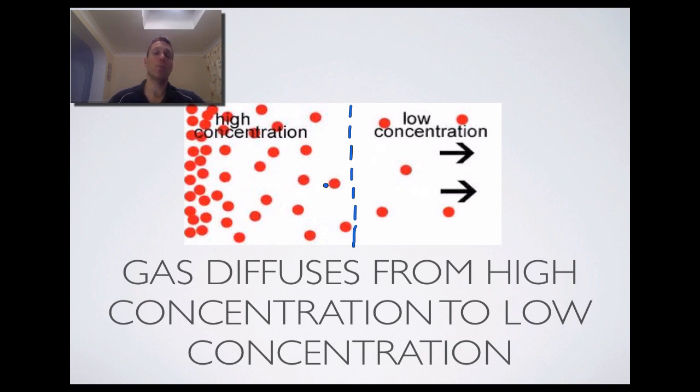So gases diffuse from high concentration to low concentration, and that's what allows for our diffusion. And that diffusion gradient means that it will continue until an equilibrium is reached.